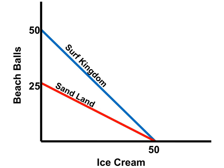Here are Production Possibilities Frontiers for Surf Kingdom and Sandland. These PPFs were drawn with a straight line, which means that opportunity costs are constant.